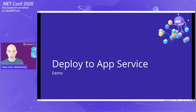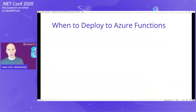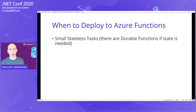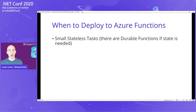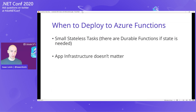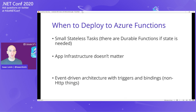Obviously I can deploy to App Service, but there are tons of other options. What about Azure Functions? If you don't know what Azure Functions are, they're small stateless tasks you can run inside of Azure using the serverless model — though you can have stateful or durable functions if you want them. If app infrastructure really doesn't matter for your application, like if you're running tasks that are moving things around or doing some automation, Azure Functions is a great option.